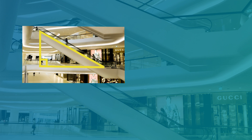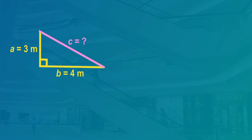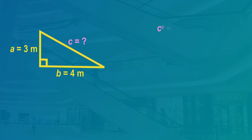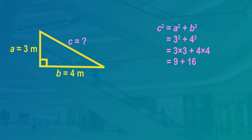This escalator is a right angled triangle where the sides that make the right angle are three meters and four meters long. Pythagoras' rule to find the hypotenuse is C squared equals A squared plus B squared. A equals 3 and B equals 4. So A squared equals 3 times 3. B squared equals 4 times 4. 3 times 3 is 9. 4 times 4 is 16.